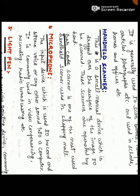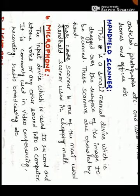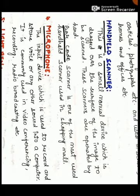The next type of scanner is handheld scanner. This is a small manual device which is dragged over the surface of the image to be scanned. The most commonly used handheld scanner is the barcode scanner, which is used in shopping malls. So these are the three types of scanner: drum scanner, flatbed scanner, and handheld scanner.